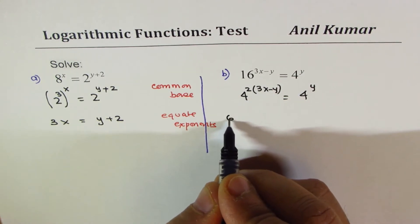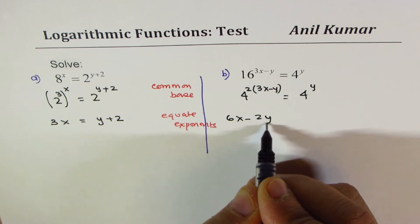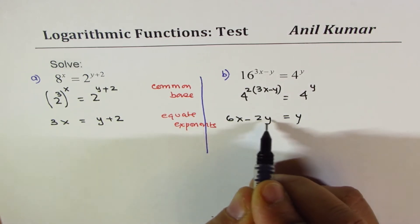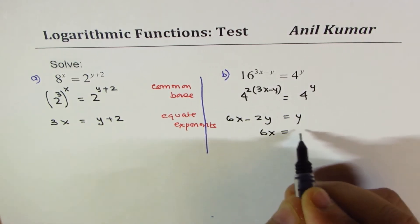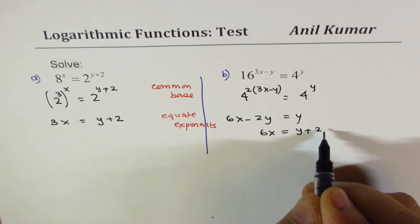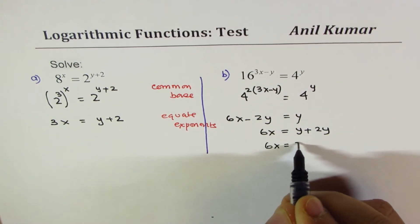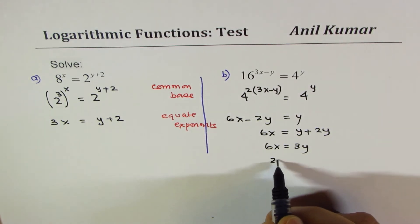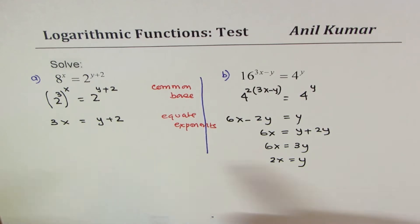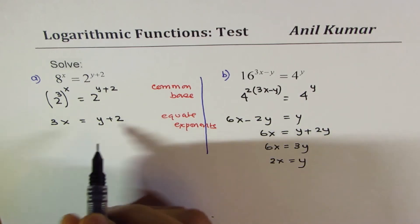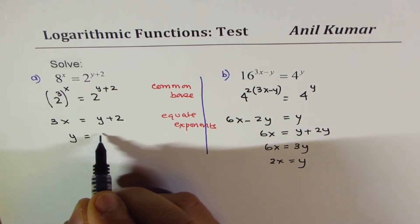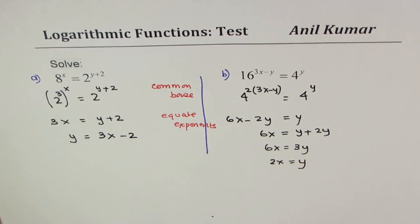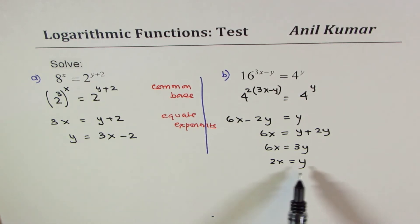If I open this bracket, I get 6x minus 2y equals y. Bring this term to the right, giving me 6x equals y plus 2y, or we get 6x equals 3y. Dividing by 3, we get 2x equals y. I could isolate y here also. I could write y equals 3x minus 2.